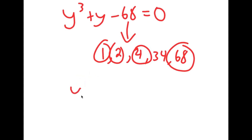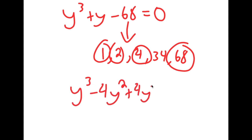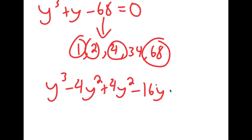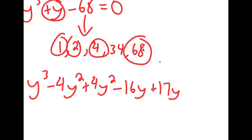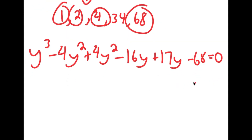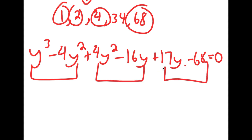From my original equation, y to the power of 3, I'm going to rewrite this as y to the power of 3 minus 4y squared plus 4y squared minus 16y — which is 4 squared — plus 17y, because negative 16y plus 17y is equal to y, and finally minus 68 at the end, is equal to 0. Now I'm going to factor by grouping: these two are a group, these two are a group, and these two are a group.